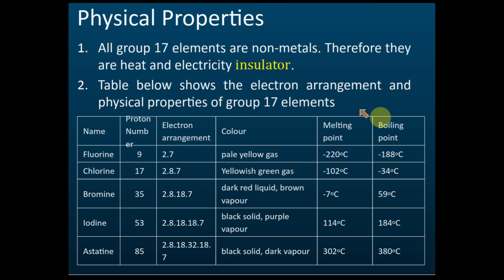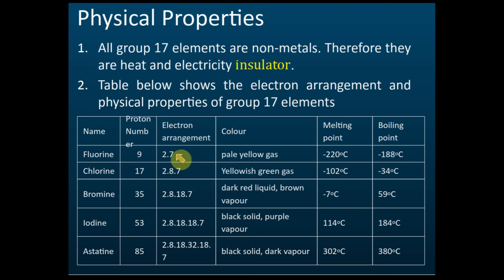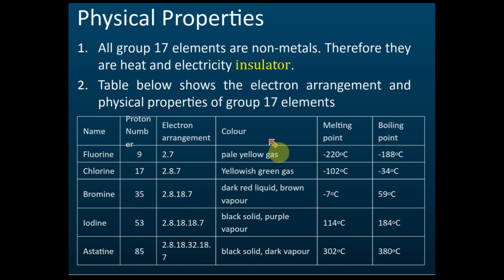This table shows the physical properties of group 17 elements, from fluorine to astatine. The proton number and electron arrangement are less important. You just need to know that they have seven valence electrons — you can see all the valence electrons are seven.